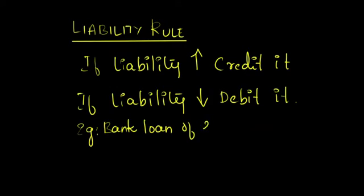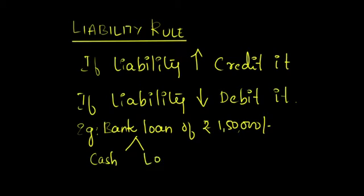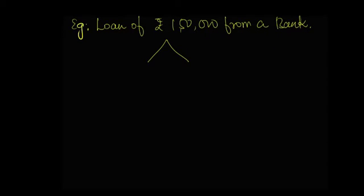For instance, if a business obtains a loan of rupees 1,50,000 from a bank, then there are two components involved here: the cash received from the bank as loan, and the bank loan itself. While passing the general entry, we will look into these two components in detail.